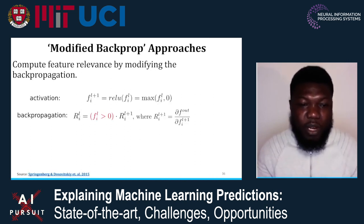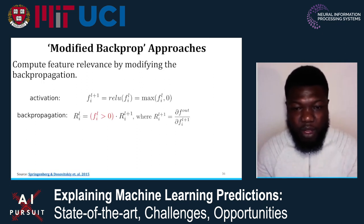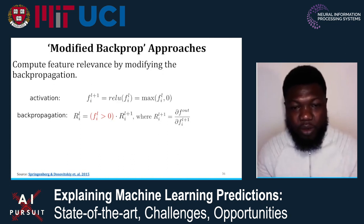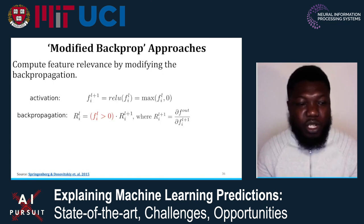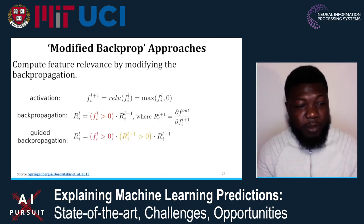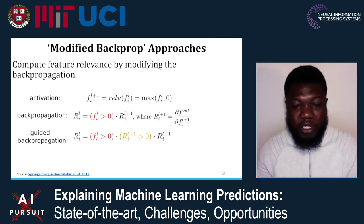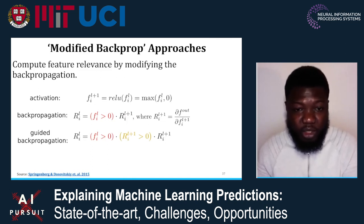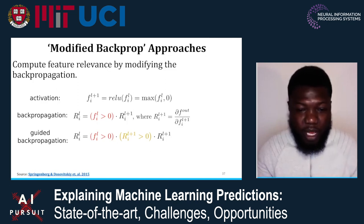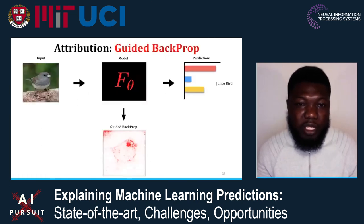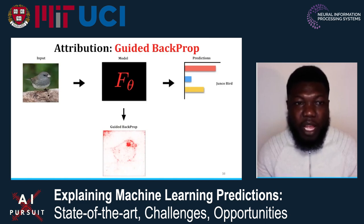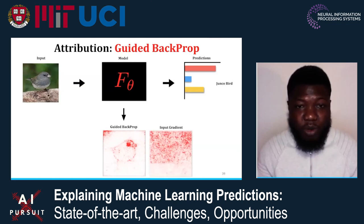For a ReLU network, the activation formulation is as shown. When you backpropagate through a ReLU network, you must account for the forward ReLU applied originally. One method is guided backpropagation: it modifies the regular backpropagation approach with the key change of zeroing out negative gradients during backpropagation. This simple change makes drastic differences in the guided backprop saliency map — it is more sparse than the original input gradient.